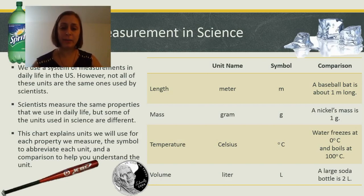Mass we'll measure in grams with the symbol G. A nickel's mass is one gram, so if you bounce a nickel around on your hand, you can feel that one gram is very light.